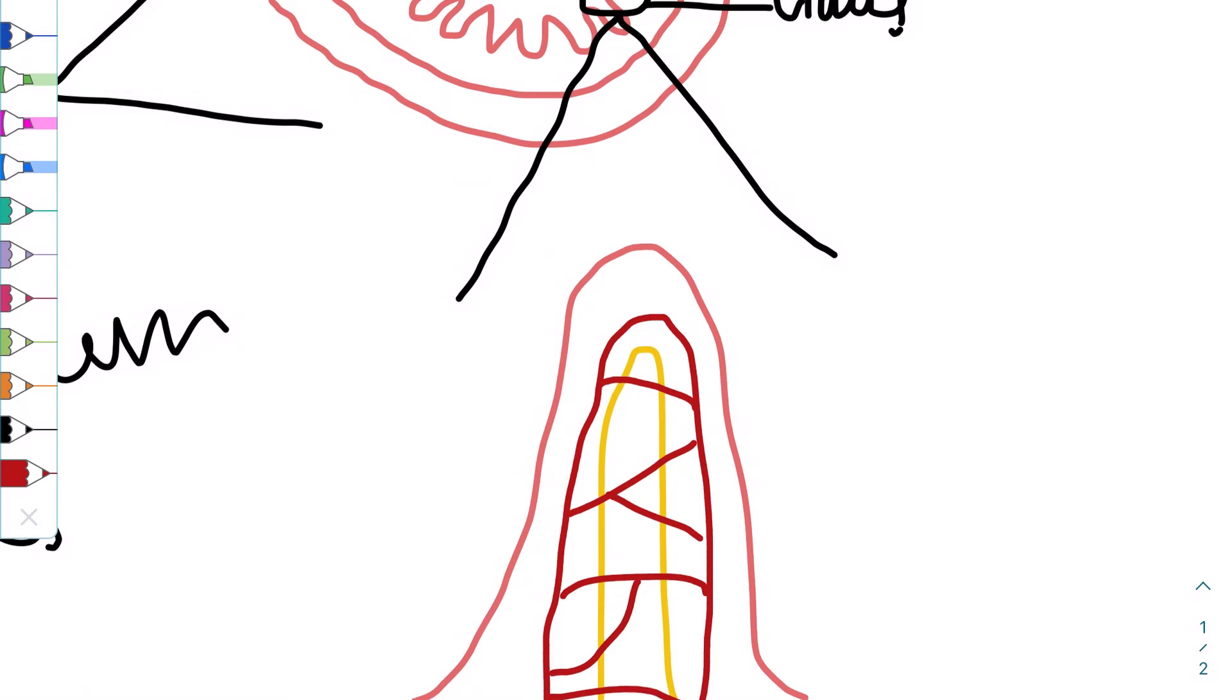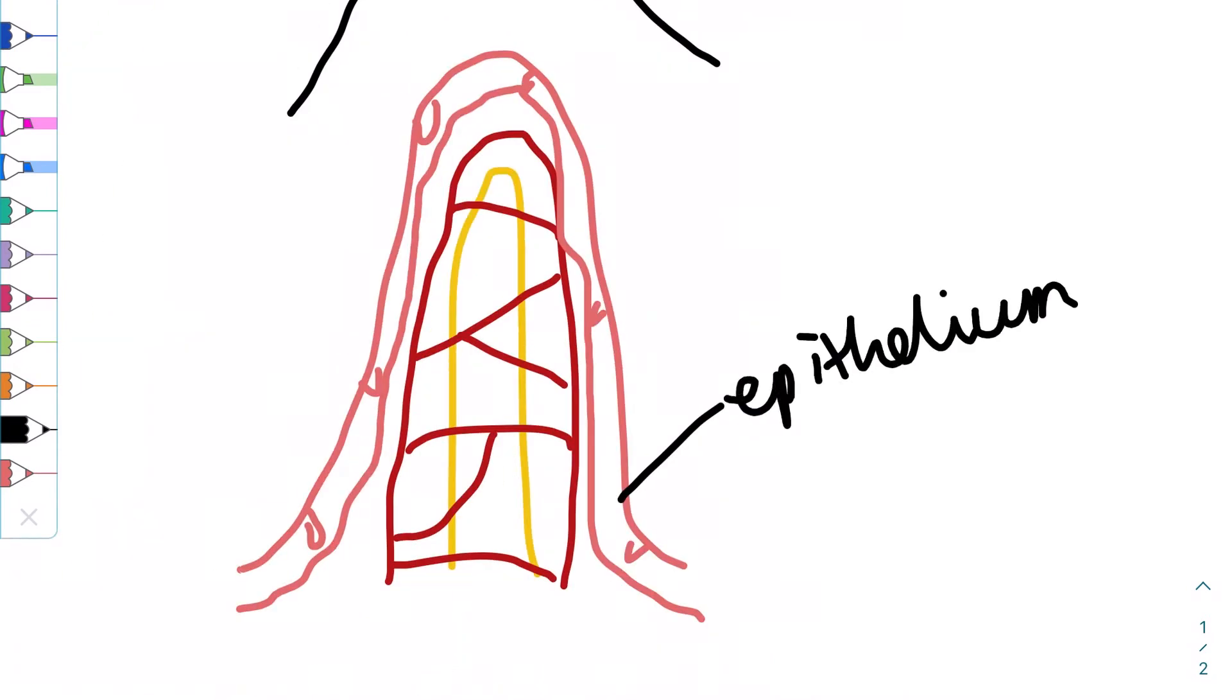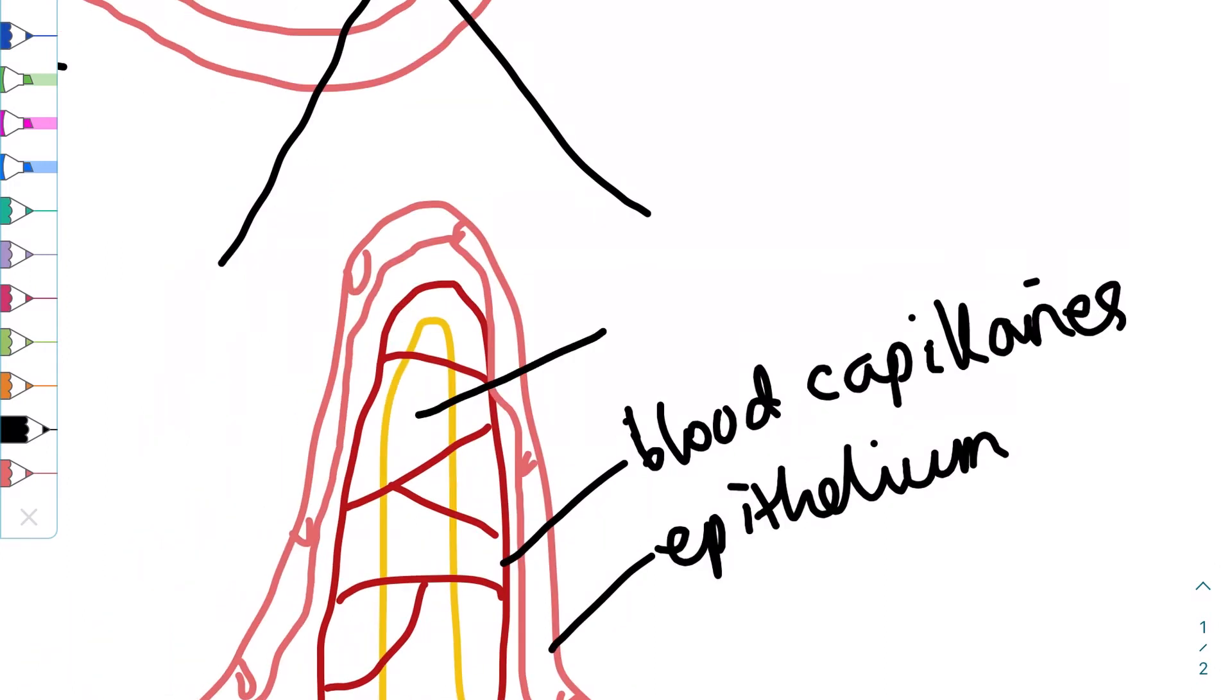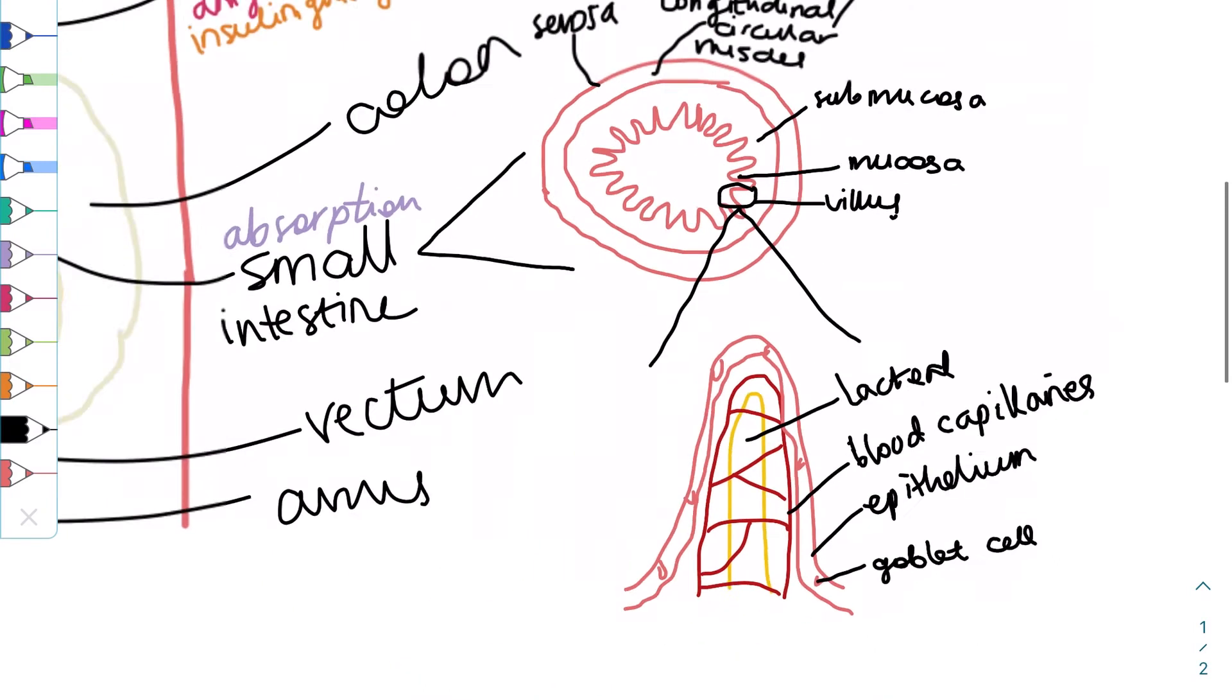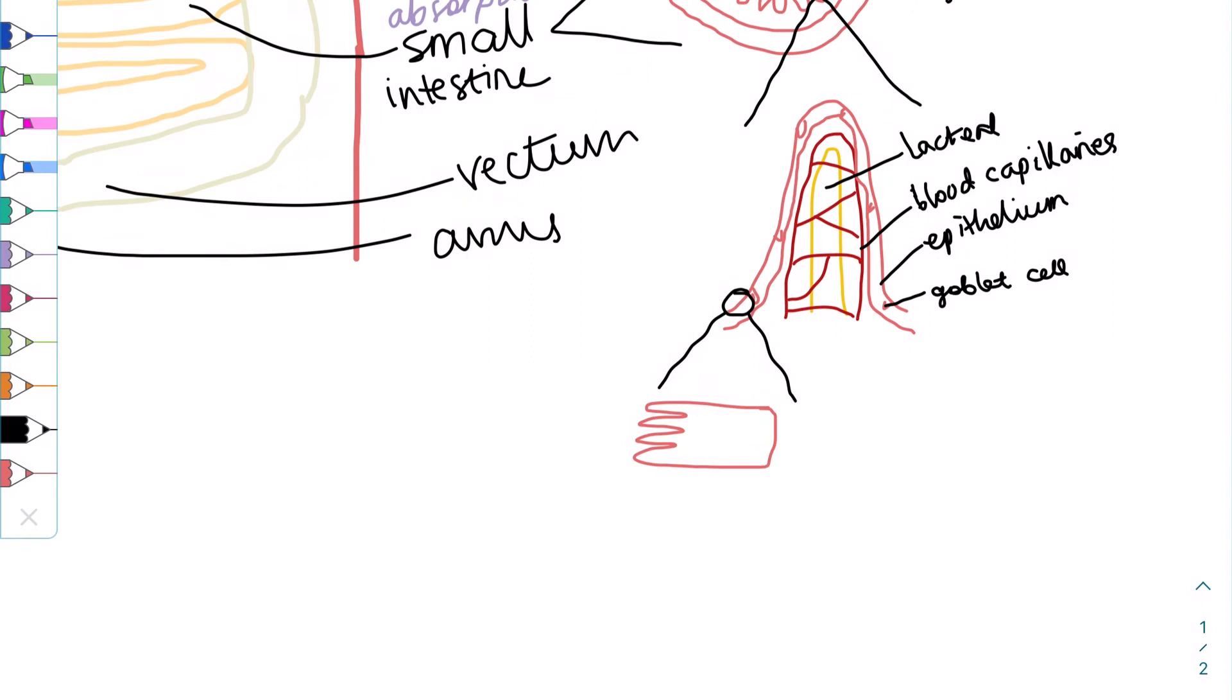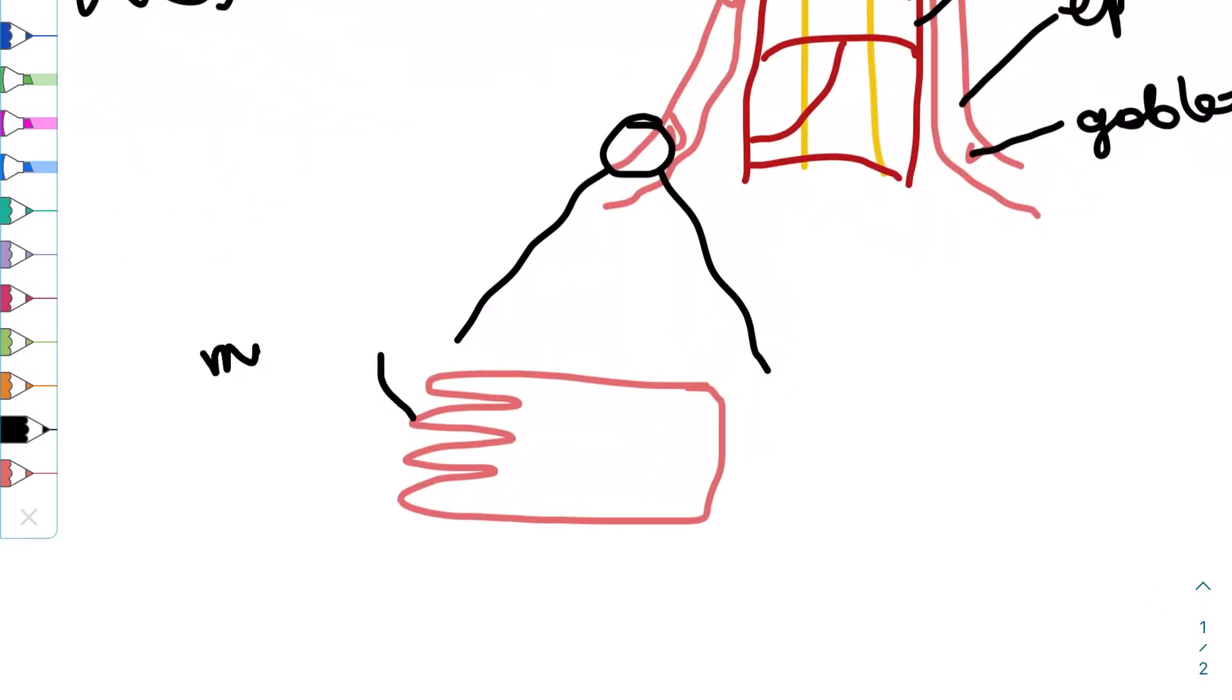Here is a zoomed-in drawing of a villus. The outer layer of cells is the epithelium. Inside the villus, there is a protrusion of a lymphatic vessel called the lacteal. Surrounding it is a network of blood capillaries. Goblet cells in the epithelium secrete mucus into the lumen of the small intestine. Also keep in mind that a villus also has projections in the cell membrane, called microvilli, which further increase the surface area.